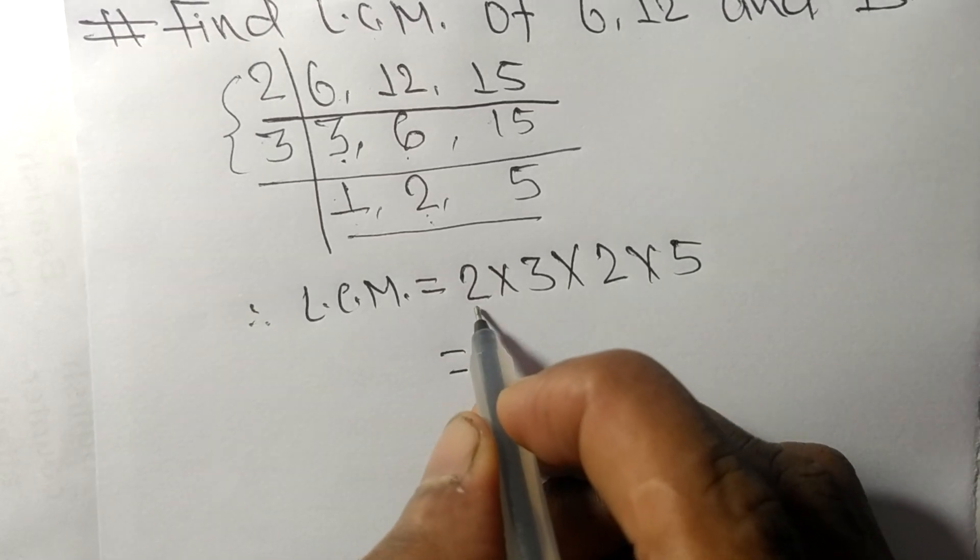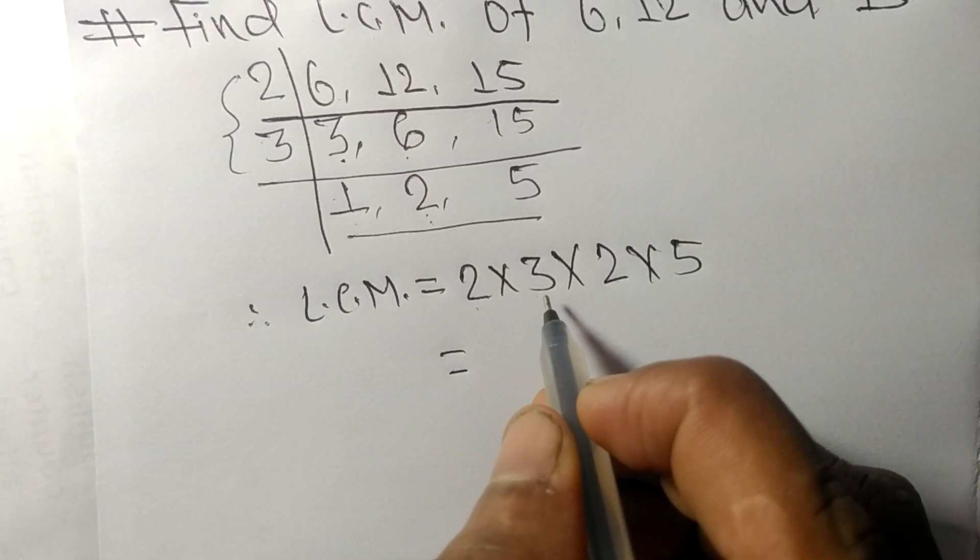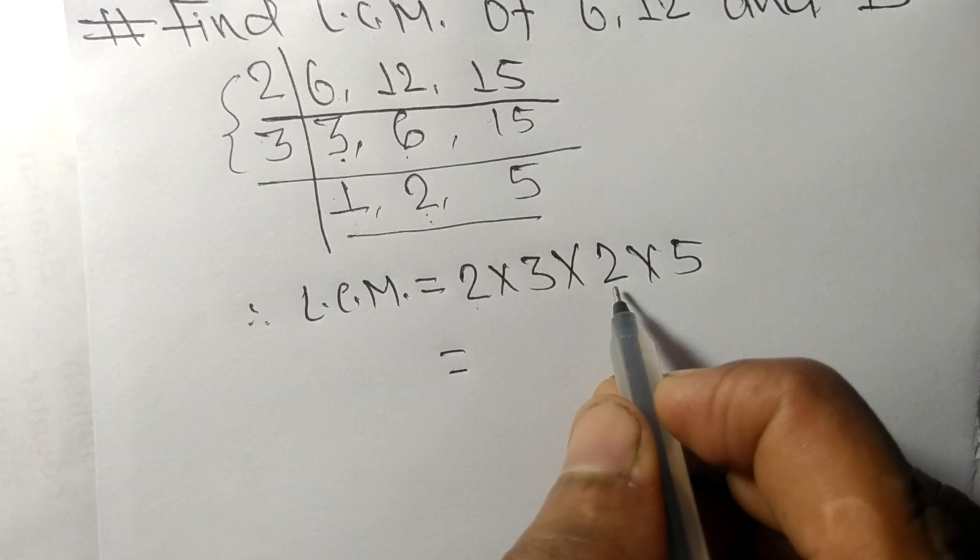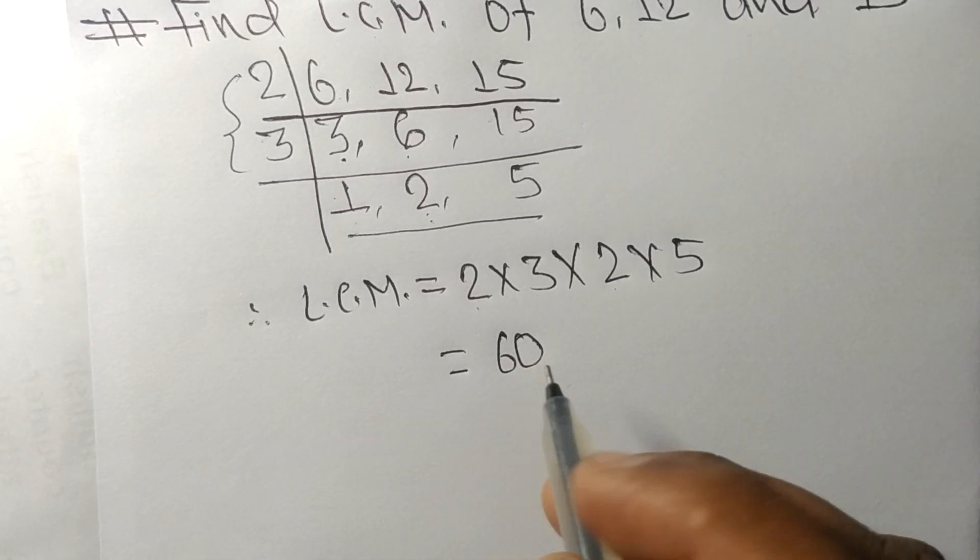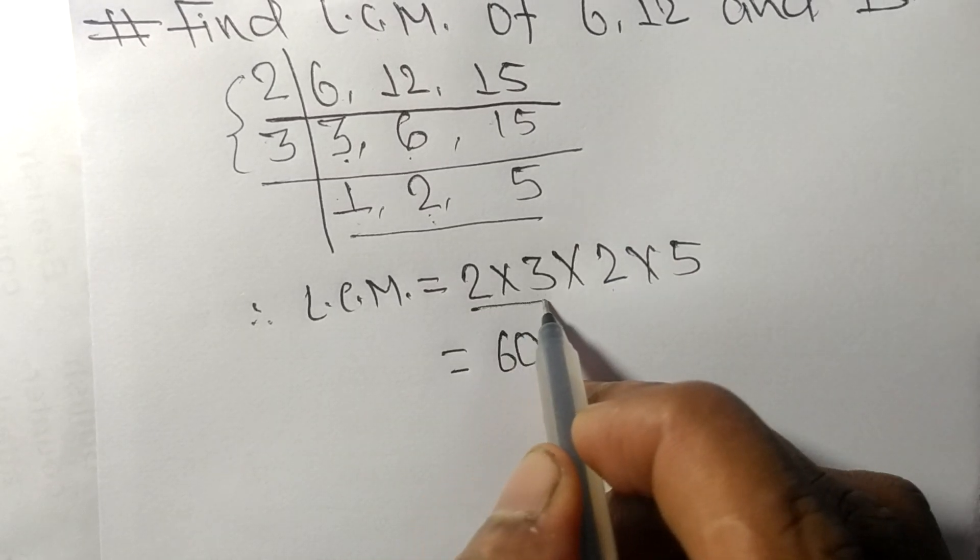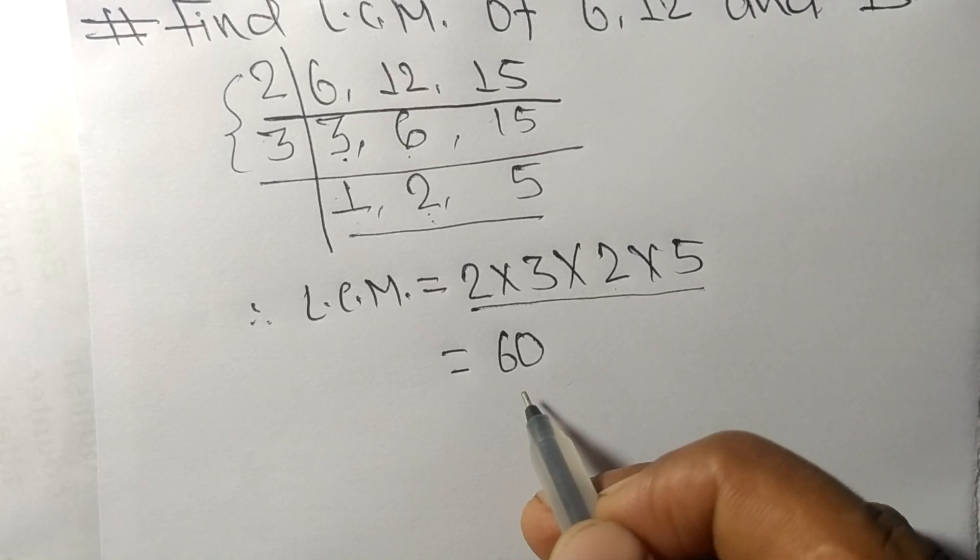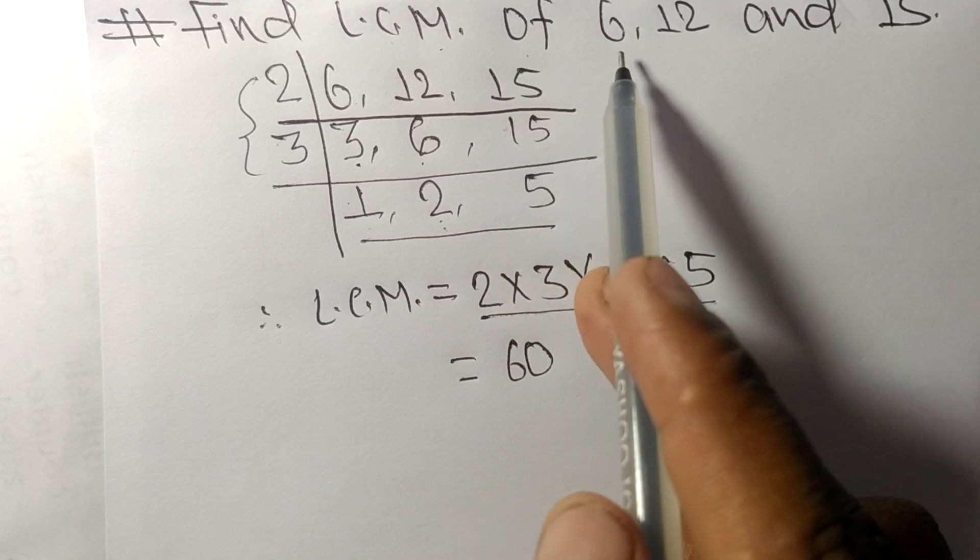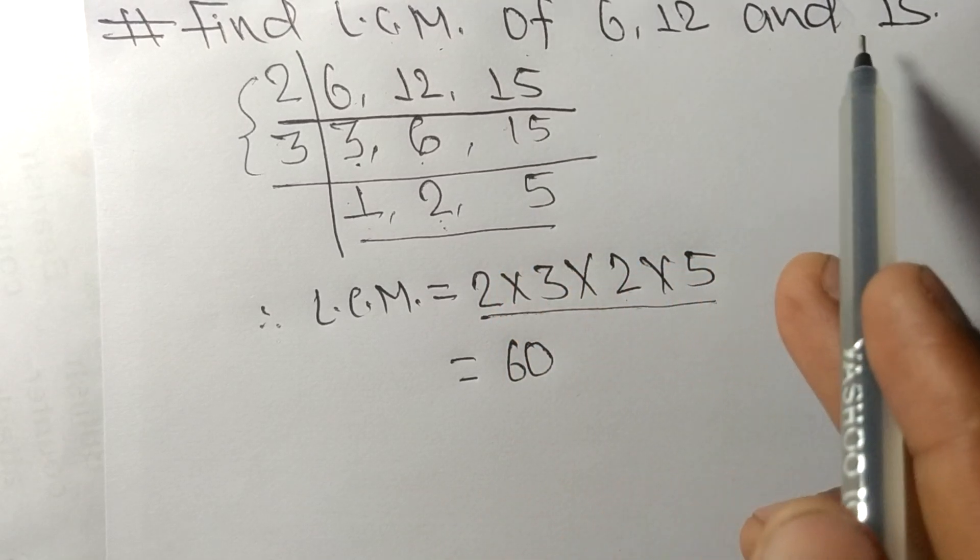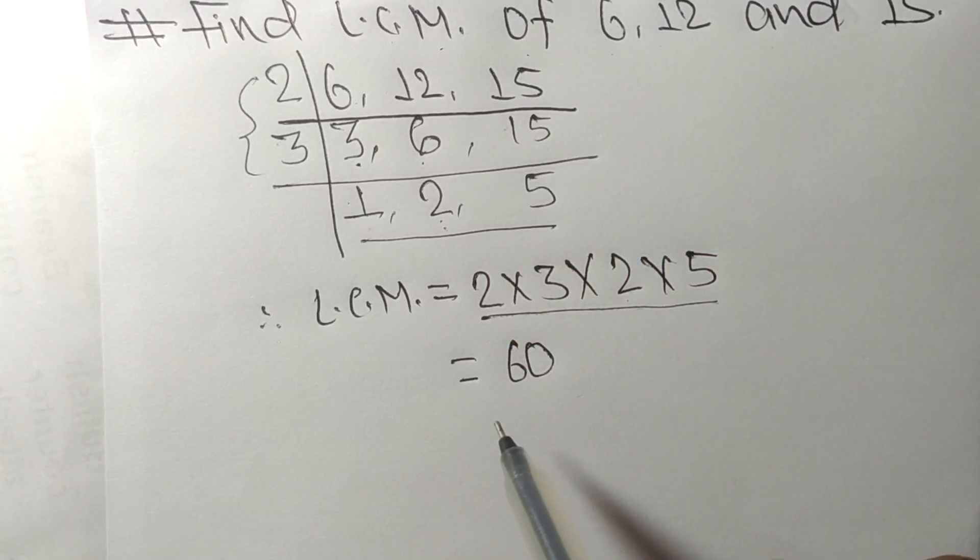So 2 times 3 means 6, 6 times 2 means 12, 12 times 5 means 60. By multiplying all these numbers we get 60. So 60 is the LCM of 6, 12, and 15.